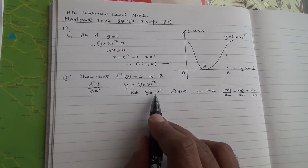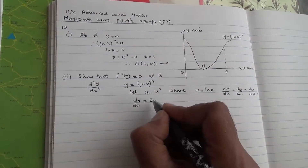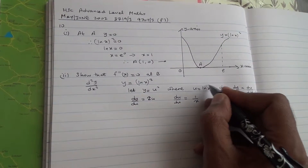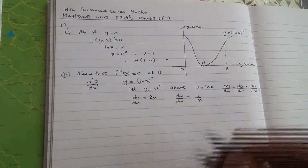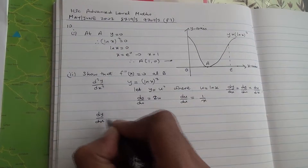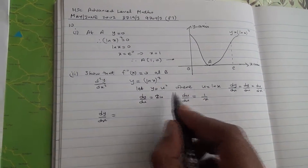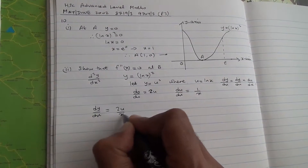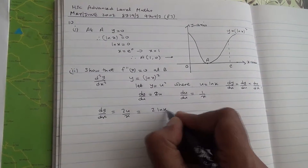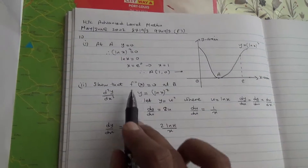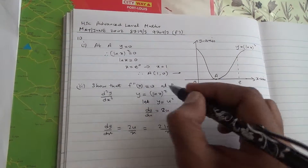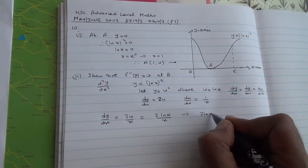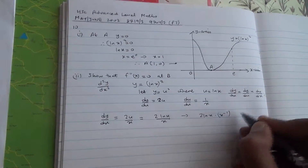Differentiating, dy/du equals 2u, and du/dx equals 1 over x, because the derivative of ln x is 1 over x. So dy/dx equals 2u times 1 over x, which is 2u over x. Since u equals ln x, this gives us 2 ln x over x as the first derivative. Now we need to re-differentiate this to reach the second derivative. We can write it as 2 ln x times x to the power of minus one, and use the product rule.